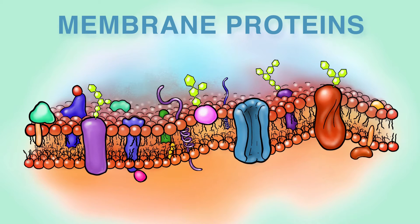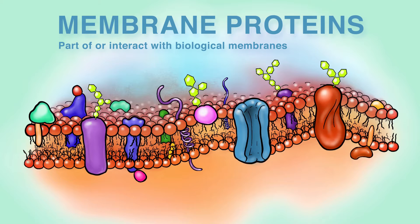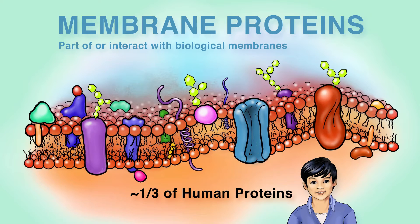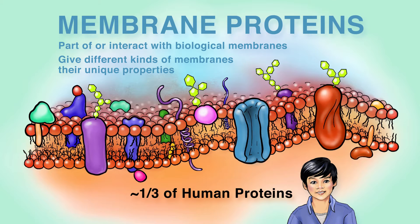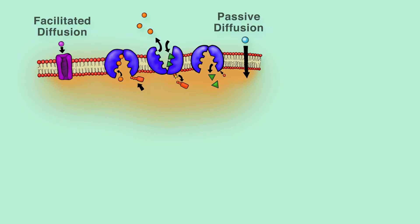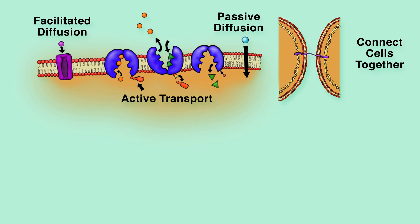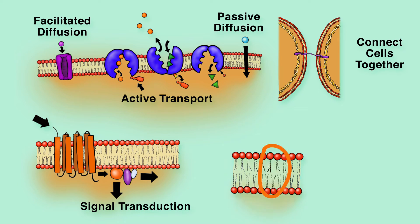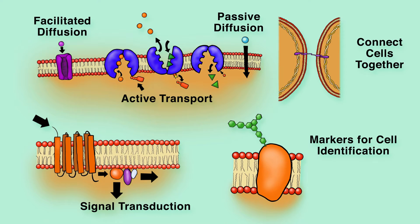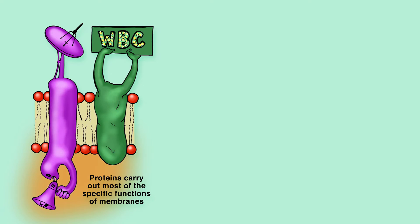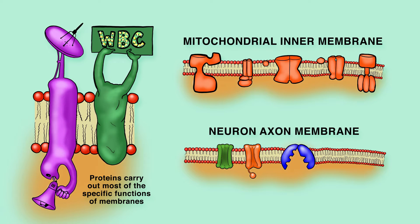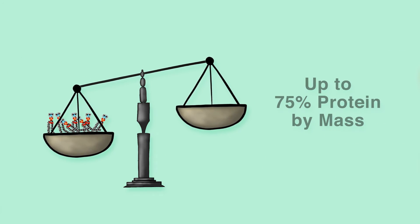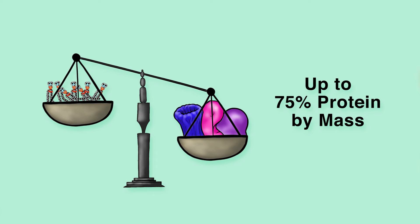Membrane proteins are those proteins that are either a part of or interact with biological membranes. They make up around one-third of human proteins and give different kinds of membranes their unique properties. They help with facilitated diffusion and active transport, connect cells together, participate in signal transduction, and act as markers for cell identification. Proteins carry out most of the specific functions of membranes, so the amount and types of proteins vary between different membranes. Membranes can be up to 75% protein by mass.